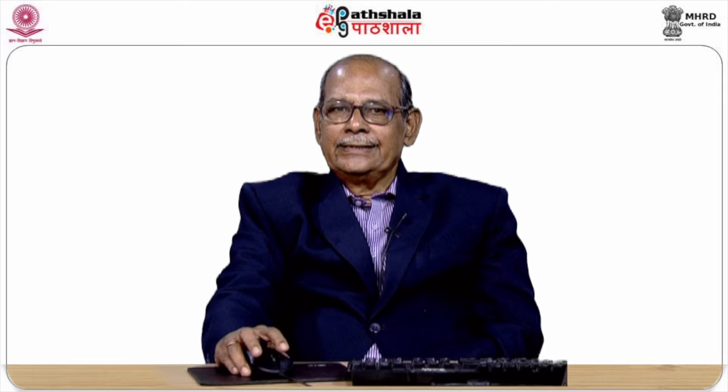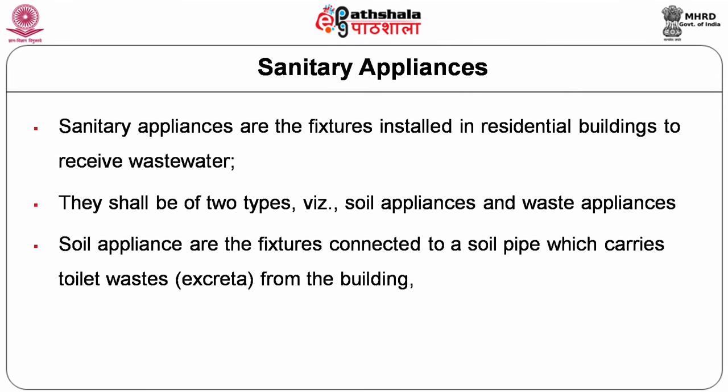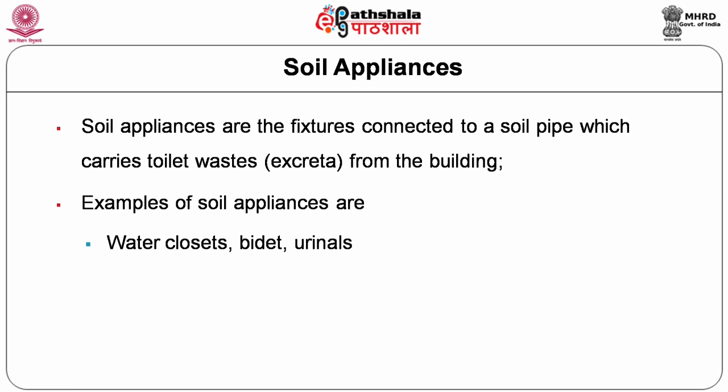For collecting the sullage and escrita, we need the sanitary appliances. The sanitary appliances are the fixtures installed in the residential building to receive the wastewater. They shall be of two types, namely the soil appliances and the waste appliances. Soil appliances are the fixtures connected to a soil pipe, which generally collects the waste from toilet fixtures and water closets, carrying the escrita from the building.